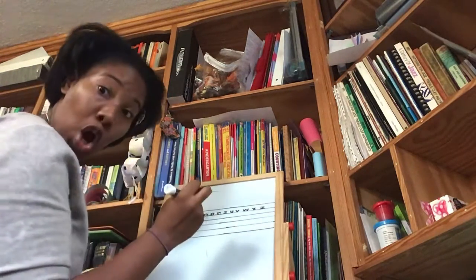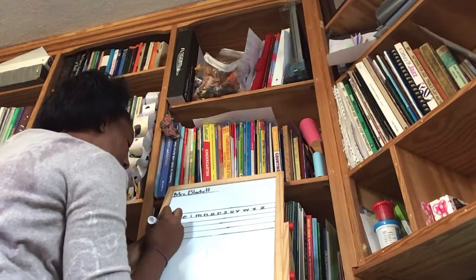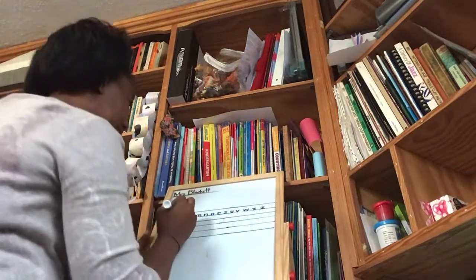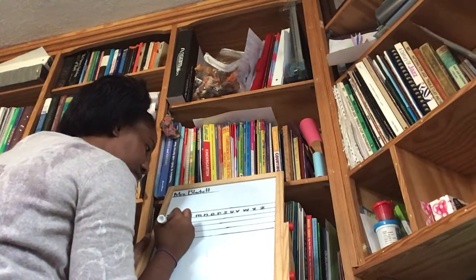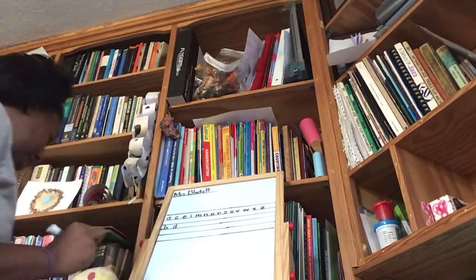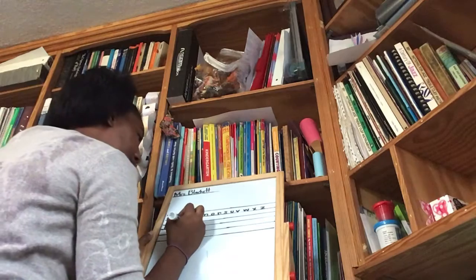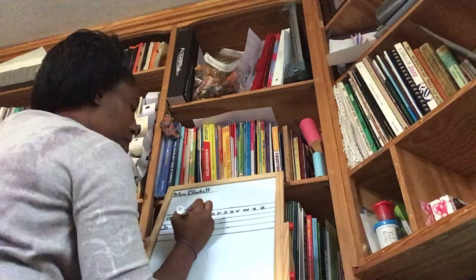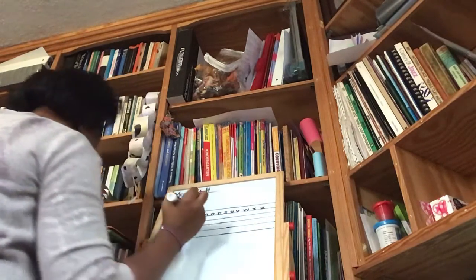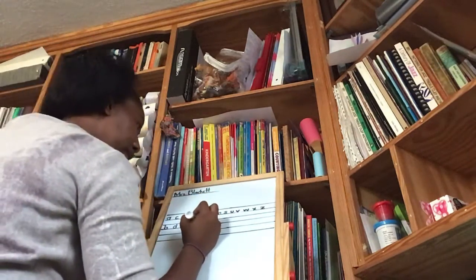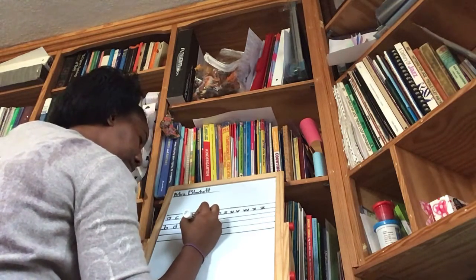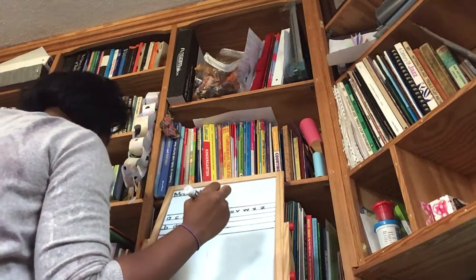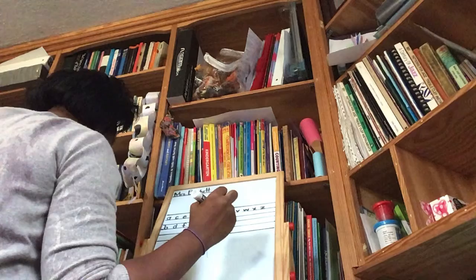And the first tall one is B. Come straight down and then come around. B. Next is D. D. F. H. K. L. And T.